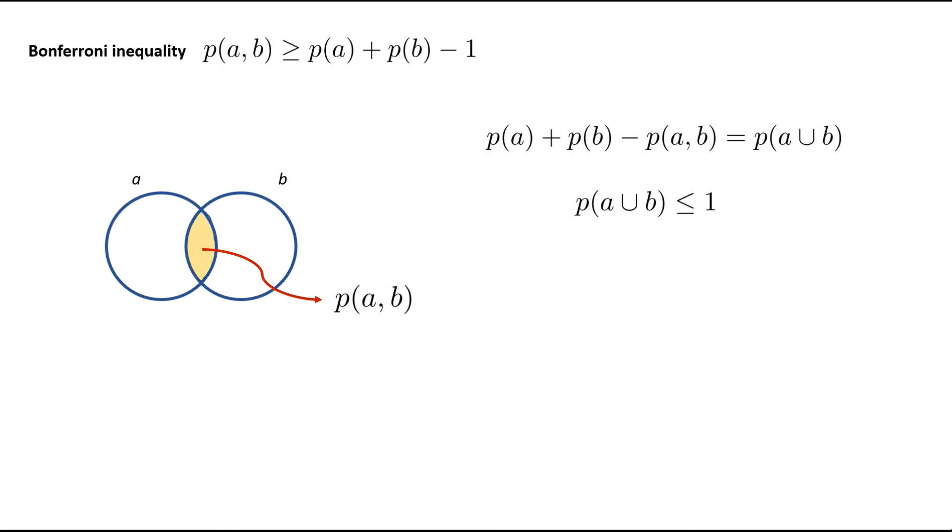We also know in general that the probability of A or B must be less than or equal to 1, because it is a probability, and by definition, probabilities cannot be greater than 1.